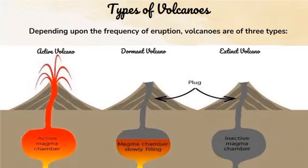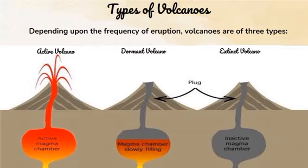The last type of volcanoes are the extinct volcanoes, which are not expected to erupt in the future. The Emperor Seamount chain in the Pacific Ocean and the Zuidwal volcano in the Netherlands are examples of extinct volcanoes.